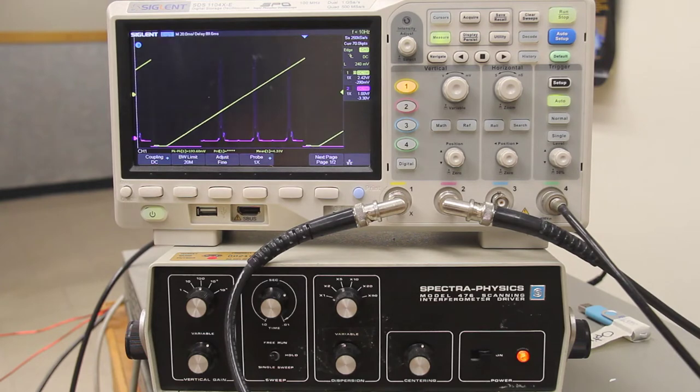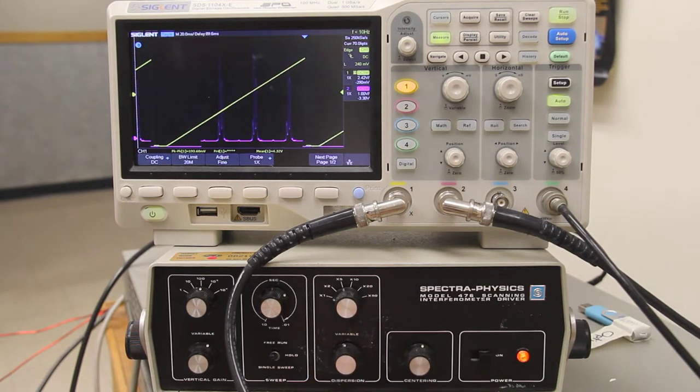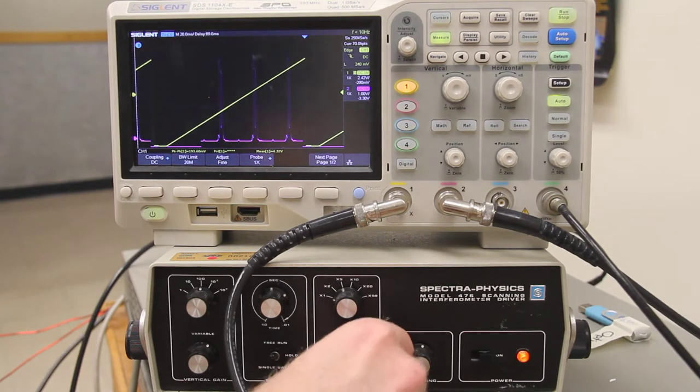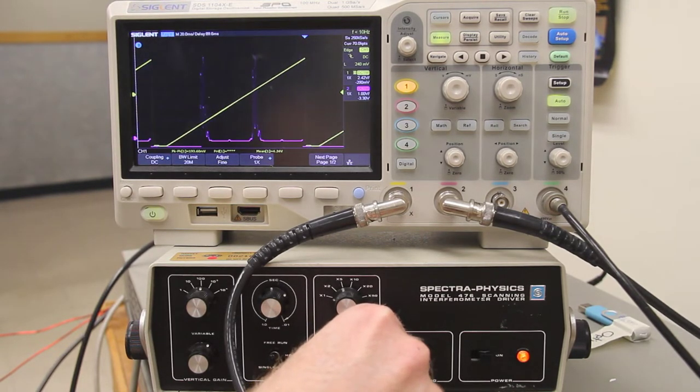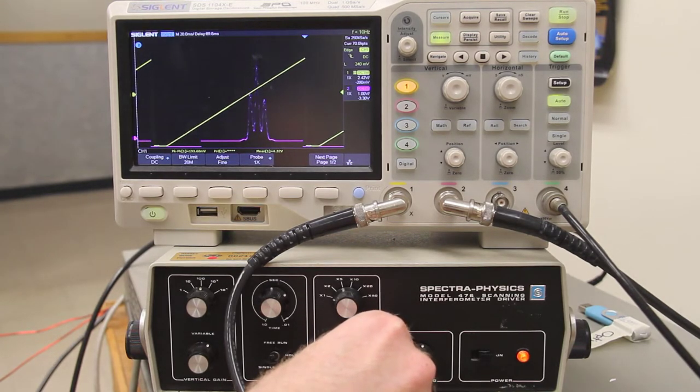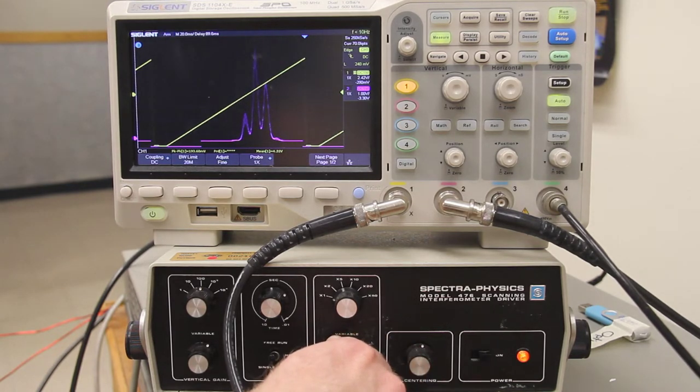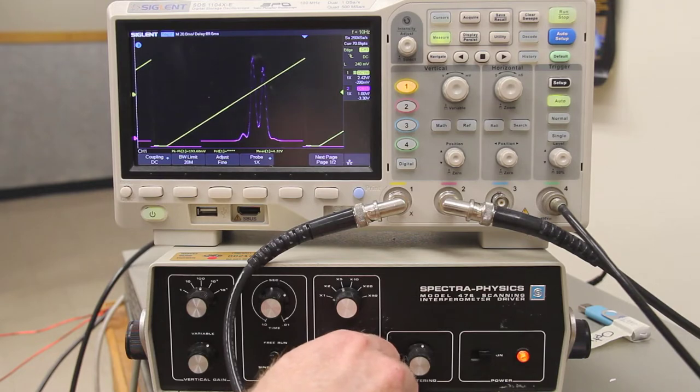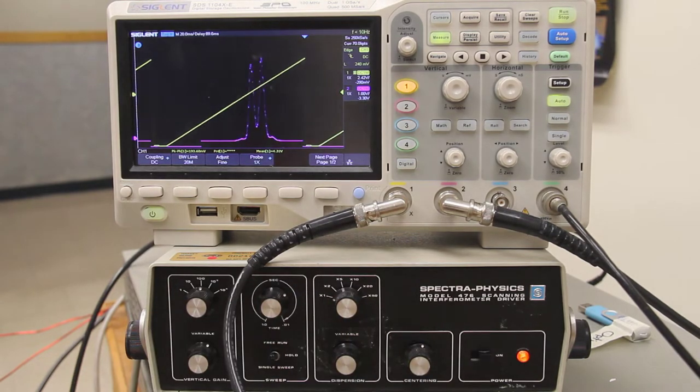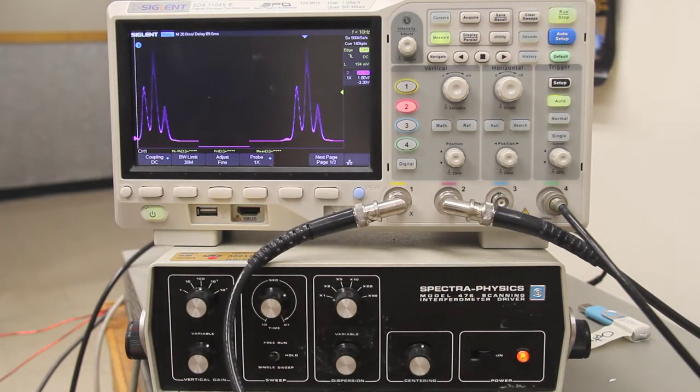But I can zoom in by changing the amount by which I apply voltage to the piezoelectric device. So let me do that here. So the yellow signal is just for triggering the oscilloscope. It's not really proportional to the actual voltage. So I'm changing the ramp. I'm kind of zooming in on the center of the ramp. And in fact, let me just get rid of the yellow line because that's not super useful to see. I've zoomed in.